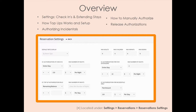Most hotels are going to very often set it and forget it on their credit card authorizations, and that's just fine because the rules are there. These are located in your settings, in reservations, in reservation settings. We have four different rules that we can set up and utilize. These rules, as they sit today, apply to all reservations that come into the system and get checked in — they are not going to be dependent on room type or other things.